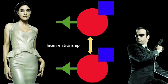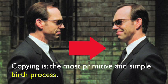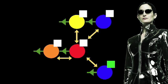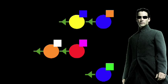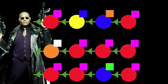How do complex adaptive systems adapt? They do so by selection. Populations change or evolve through births, deaths, migration, or immigration. Change is usually slow. Sometimes an agent will reproduce. Copying is the most primitive and simple birth process. Here we see how a white strategy is adopted by other agents. In this sequence we see adaptation by birth. Death may also accelerate the adaptation. Here, only one type of agent survives.